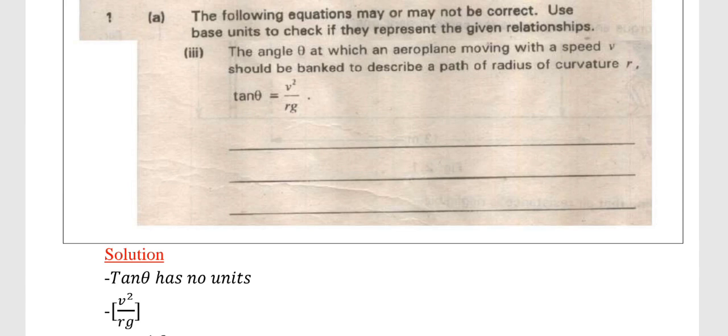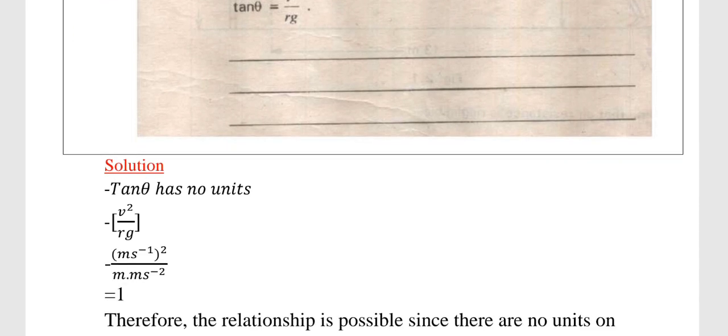If we go to the right hand side it's v²/rg. The units for v is meters per second. So we put the meters per second in square brackets and then square that. In the denominator we have r which is the radius in meters, and g which is the acceleration due to gravity in meters per second squared. We are applying the laws of indices to obtain this answer. If we square the m we get m² and s⁻², which is the same on the denominator. So both the numerator and denominator have the same values and we obtain a value of 1.